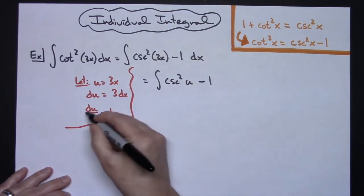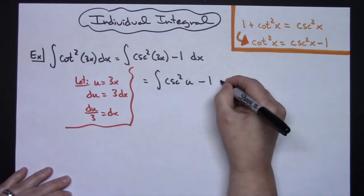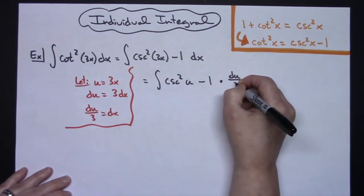Now I'm going to replace dx with exactly what it equals. So I'll have a du over a 3.